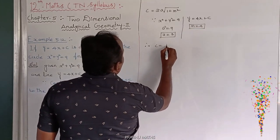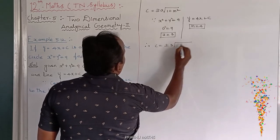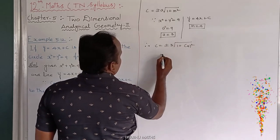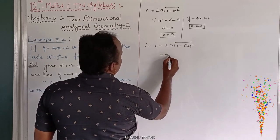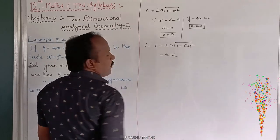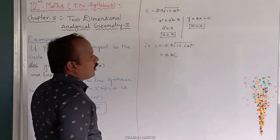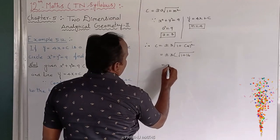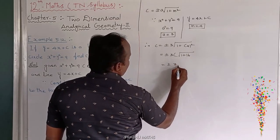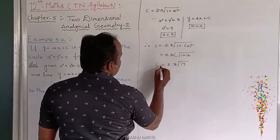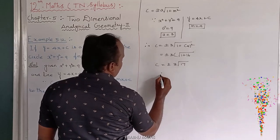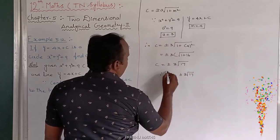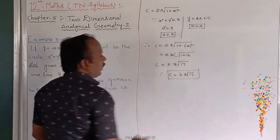Therefore, c equals plus or minus 3 times root of 1 plus 4 squared, which equals plus or minus 3 times root of 1 plus 16, equals plus or minus 3 times root of 17. So c equals plus or minus 3 root 17. That is the answer.